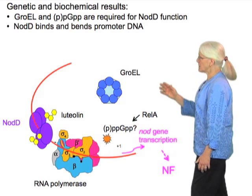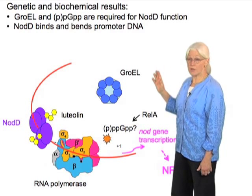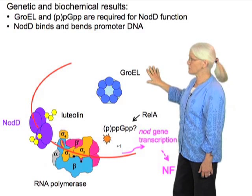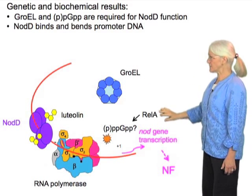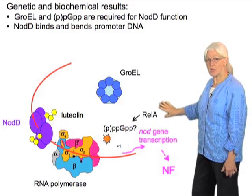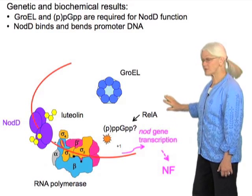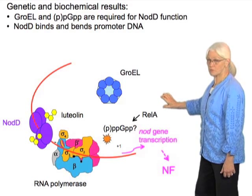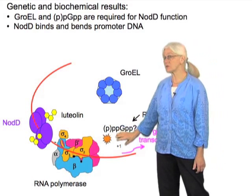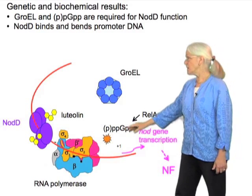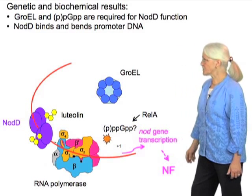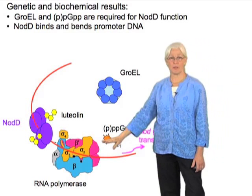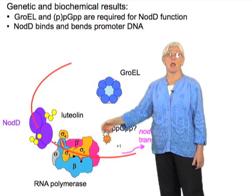We've shown through genetics that the ability of NodD to cause gene expression in bacteria in response to a plant signal requires the chaperonins GroES and GroEL. Also, through genetics we've found that this entire system requires the stringent response — classically a response to starvation — where a protein, RelA, causes the synthesis of guanosine tetra- or pentaphosphate, shown here as this star. All of that has to interact with RNA polymerase, the machine that interacts with DNA and causes template-driven transcription of an mRNA.